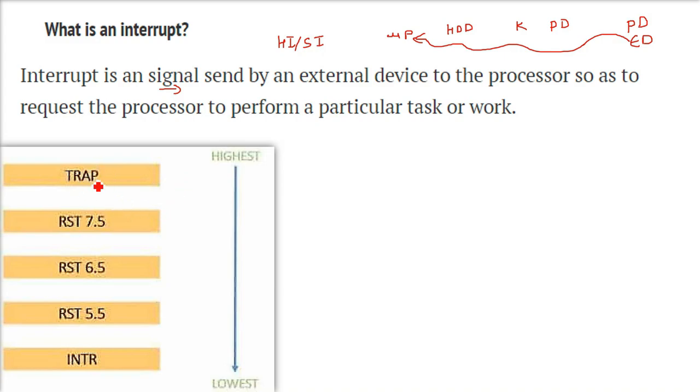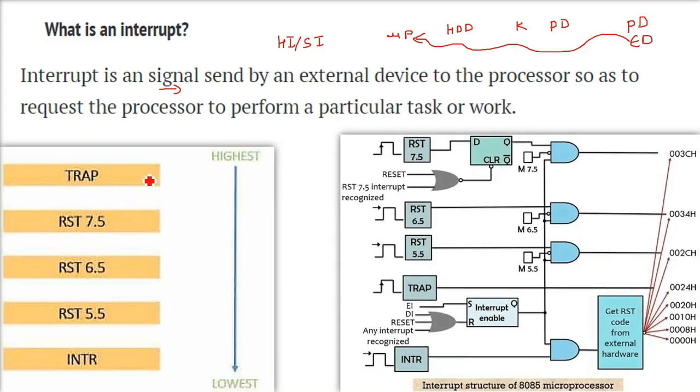The highest priority in 8085 microprocessor is for trap. Because if the trap has come, then the microprocessor has to stop all the activity and cater to it. That is, it is non-maskable. Others are maskable. That is, it can be delayed.